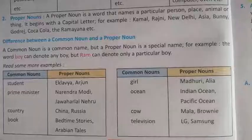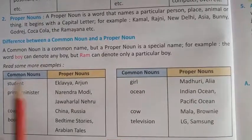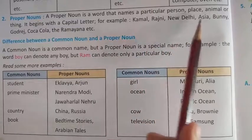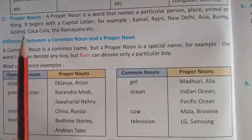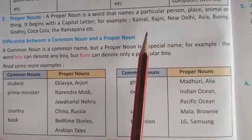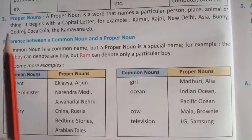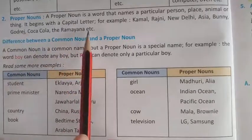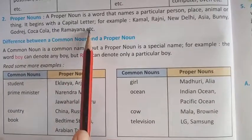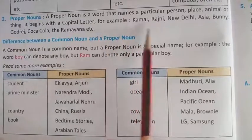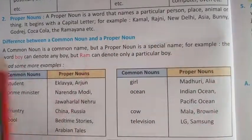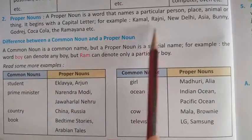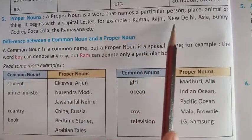Next, Proper Noun — व्यक्तिवाचक संज्ञा. A proper noun is a word that names a particular person, place, animal, or thing. उस particular person, place, animal, या चीज़ के name को Proper Noun कहा जाता है. It begins with a capital letter — और वो हमेशा capital letter से start होता है. For example: Kamal, Rajini, New Delhi, Asia, Bunny, Coca-Cola, etc.